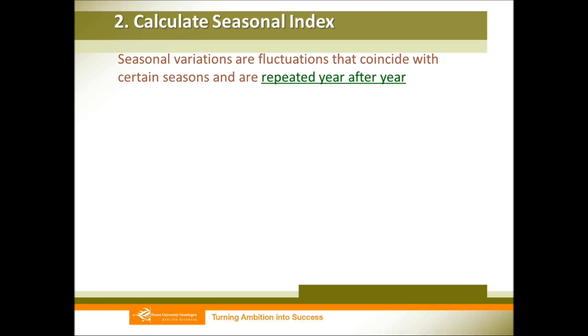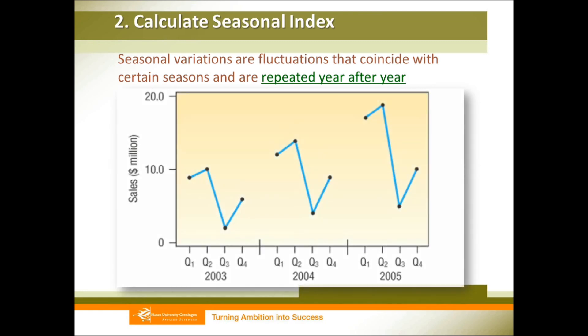When we know the four components of time series, we need to calculate the seasonal index. Seasonal index means the pattern that repeats every year. So no matter what the real sales amount is, different years follow the same sales pattern. The first quarter sales increase to the second quarter, which has the highest sales. Then it decreases, and the third quarter has the lowest sales. This pattern repeats year by year.